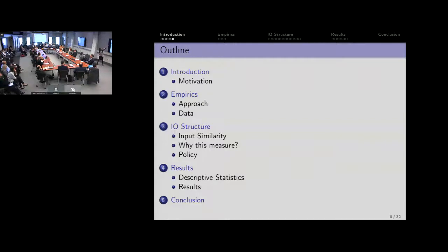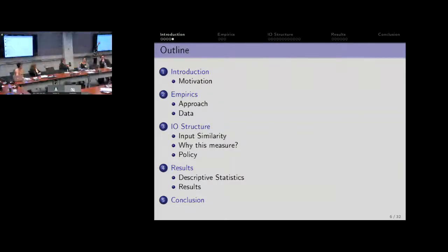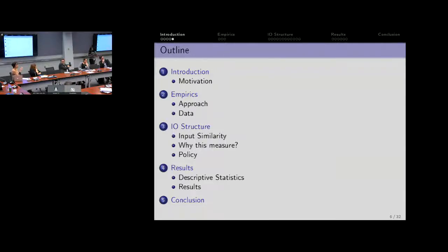I'm going to start with empirics, broadly telling you what our approach is going to be, then talk about the data, then show you a particular definition we're going to take to the data — what it means for a firm to have particular input capabilities and to be similar to a certain type of industry. I'll talk about the measure, why this measure is important, what the policy change was, and then I'll talk about the results.